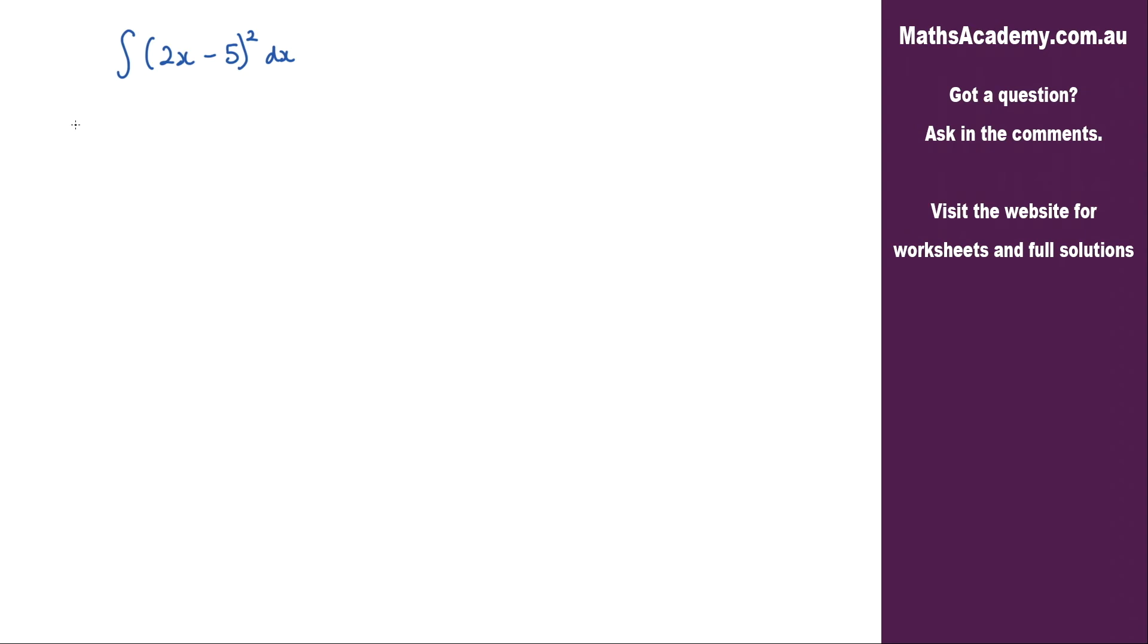For this question we're performing the following integral. It's the integral of 2x minus 5 all squared with respect to x. And the way I'm going to approach this one is as follows.